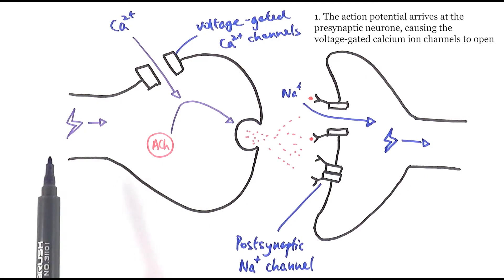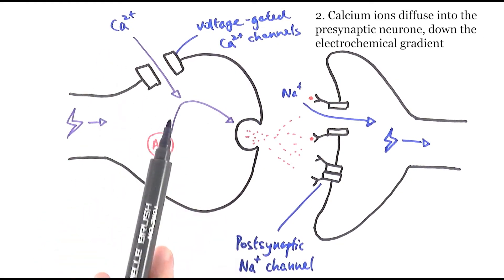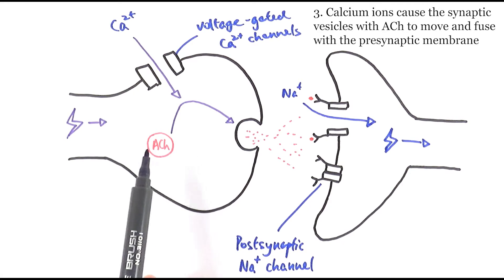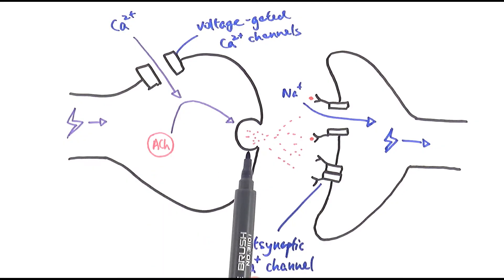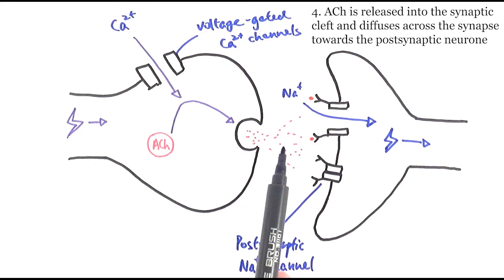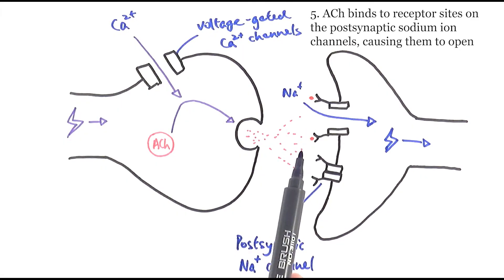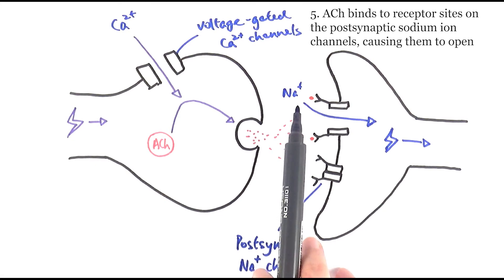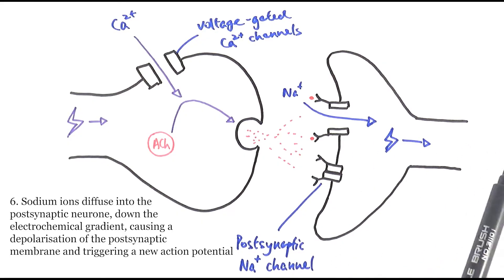Quick recap: the action potential arrives at the pre-synaptic neuron, causing voltage-gated calcium ion channels to open. Calcium ions influx down the electrochemical gradient, causing vesicles containing acetylcholine to move and fuse with the pre-synaptic membrane. Acetylcholine is released into the synaptic cleft and diffuses to the post-synaptic neuron, binding to receptor sites coupled with sodium ion channels. The sodium ion channels open, sodium influxes down the electrochemical gradient, depolarization occurs, and a new action potential is generated.